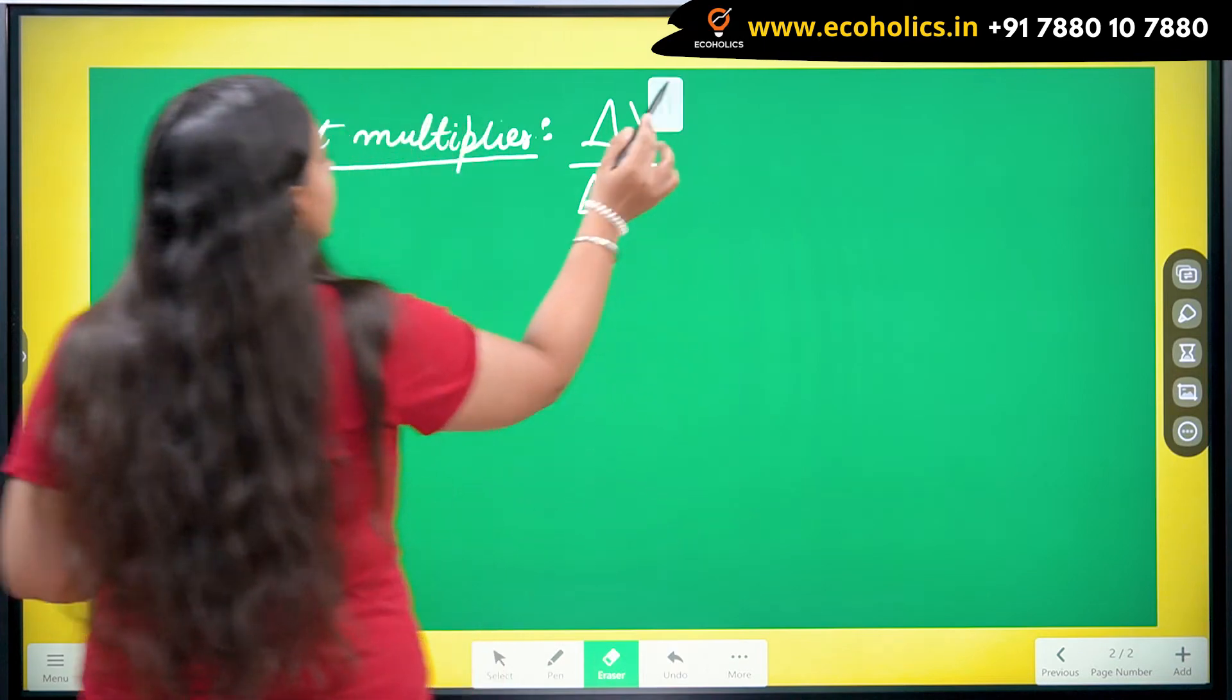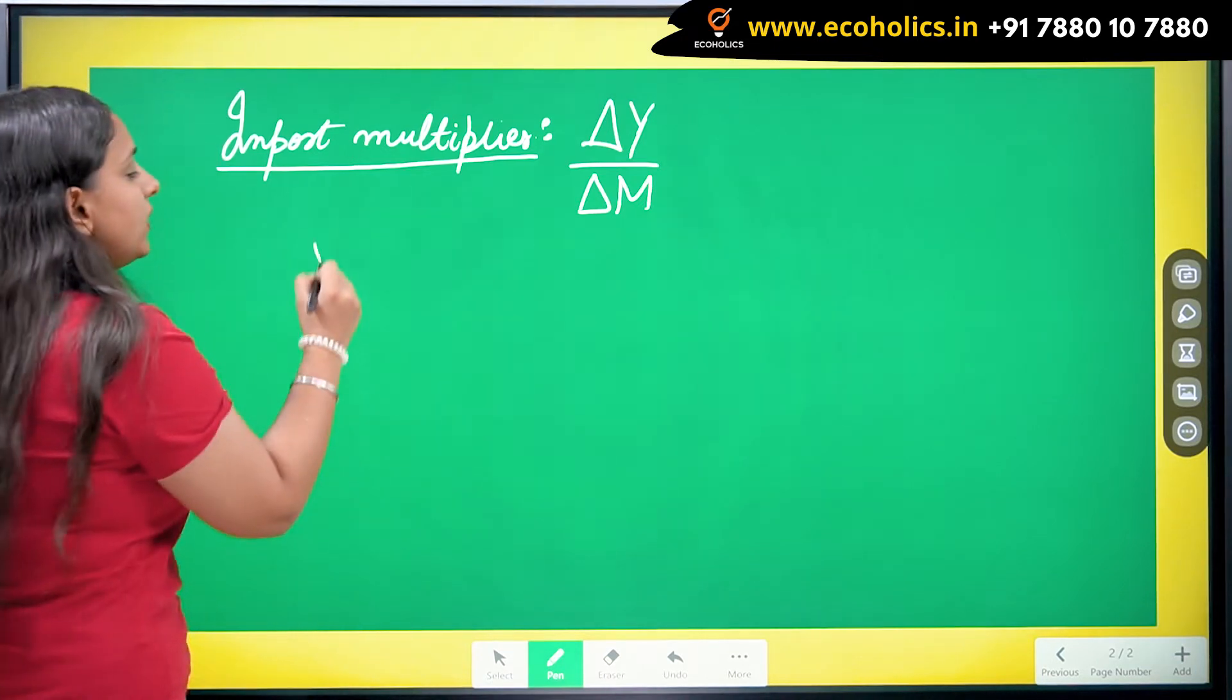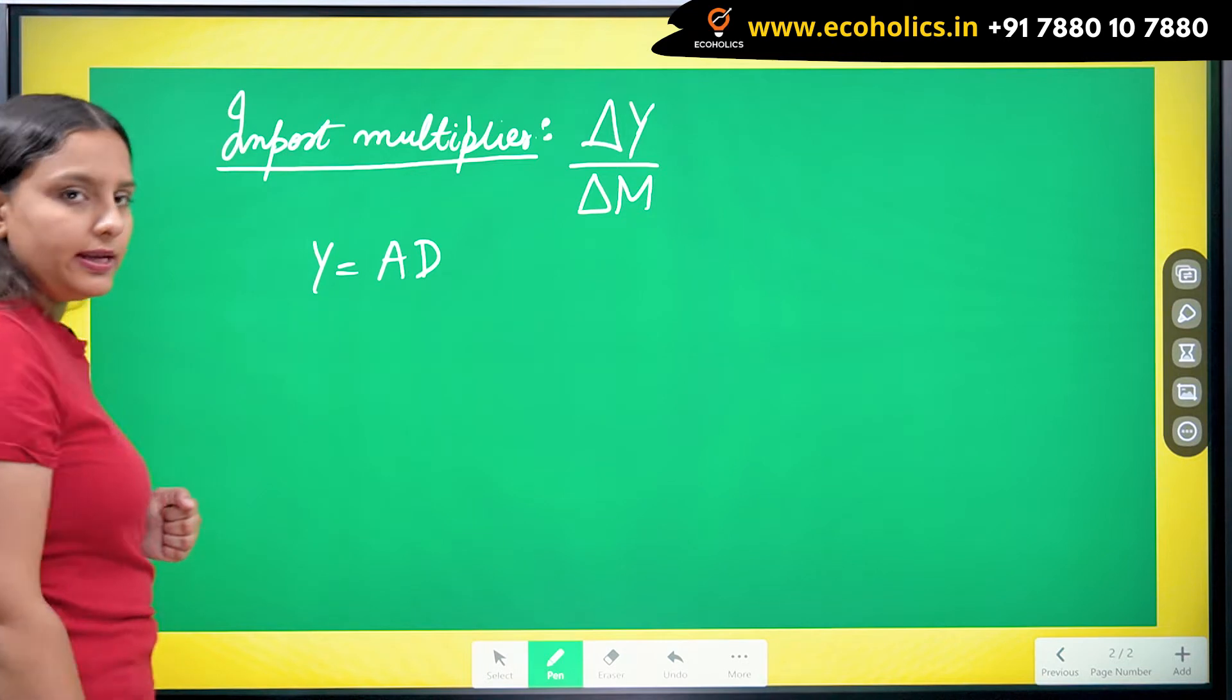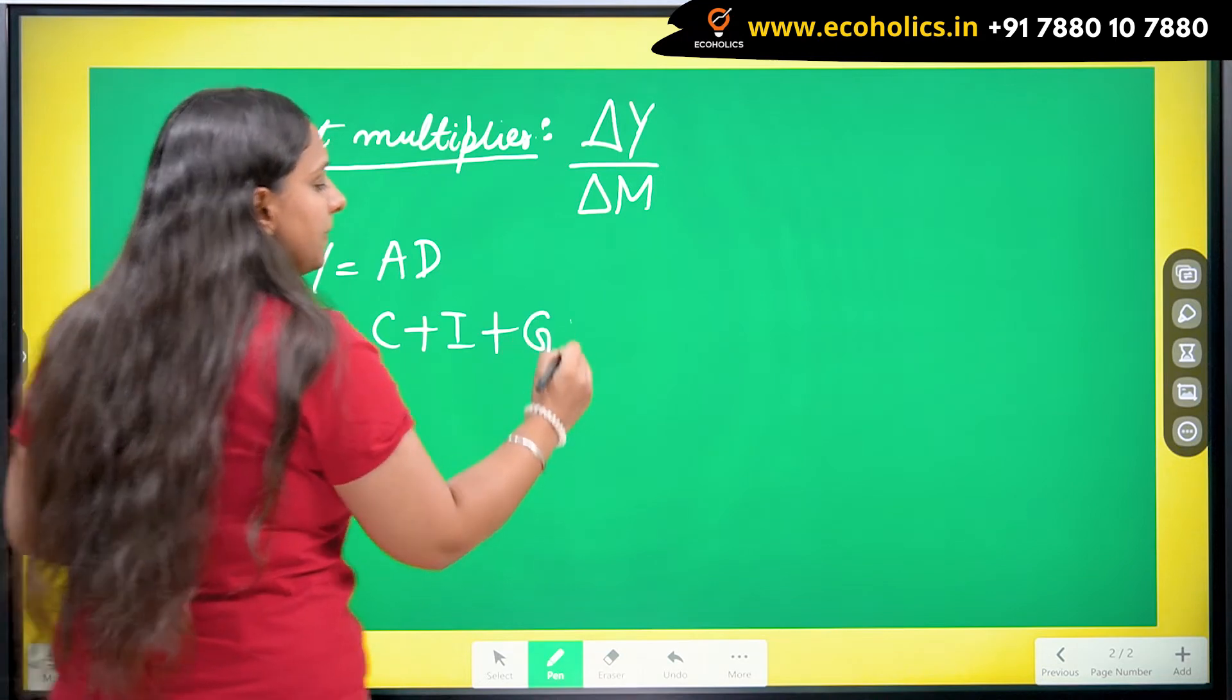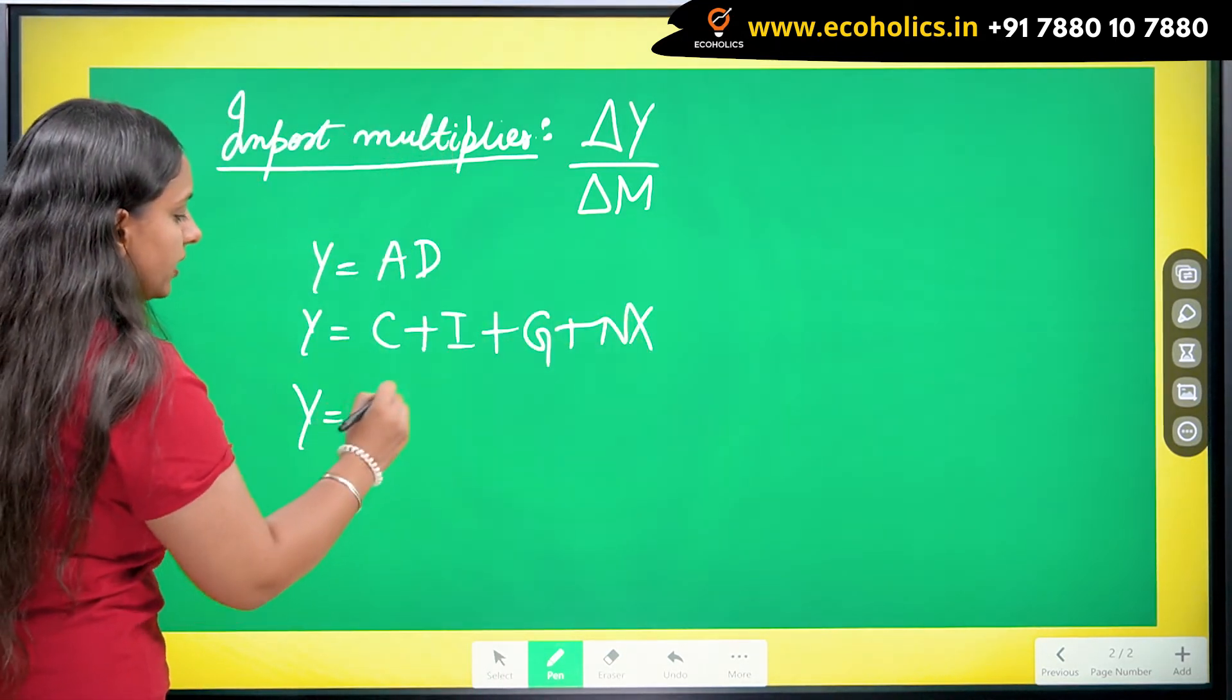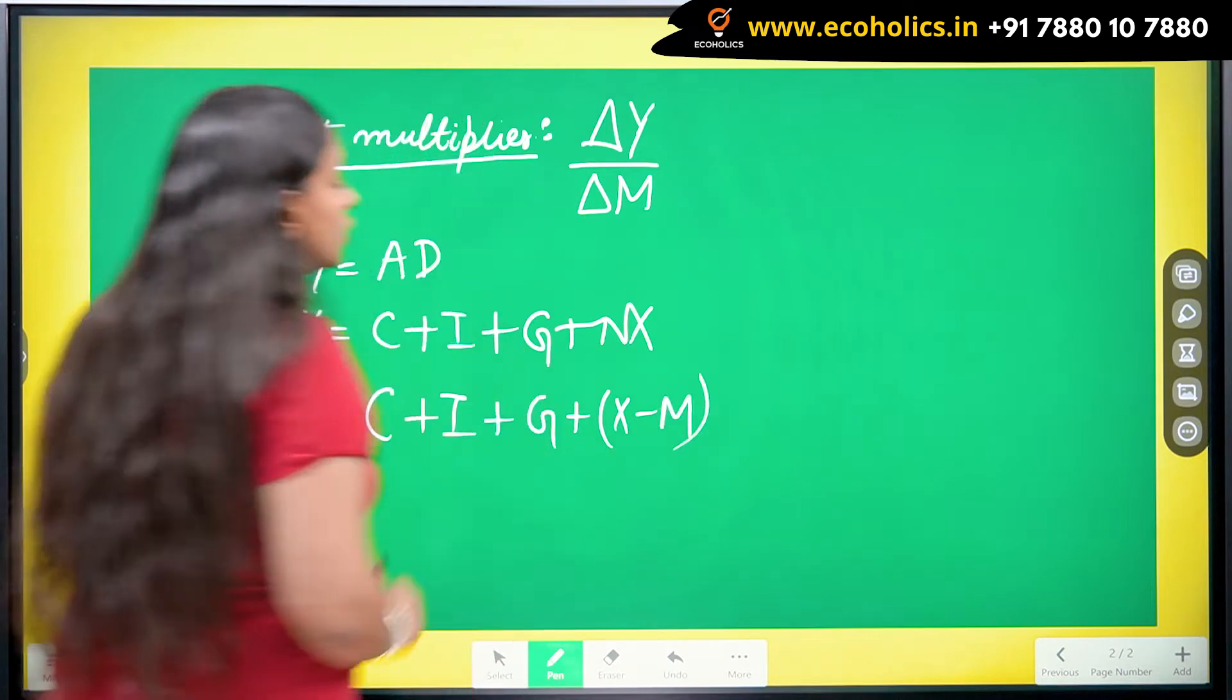Let us start with the equilibrium condition of your open economy. In an open economy, the equilibrium condition is given by Y equals to AD. And in aggregate demand, I write C plus I plus G plus net exports, where my net exports are nothing but the difference of exports and imports.